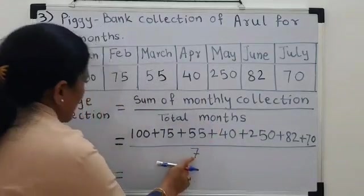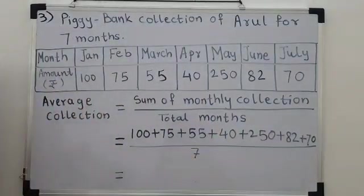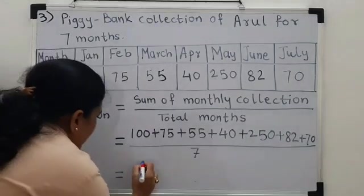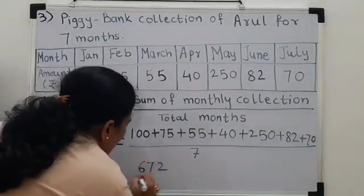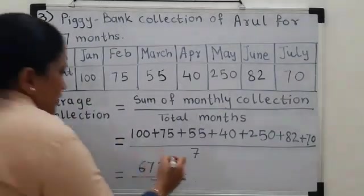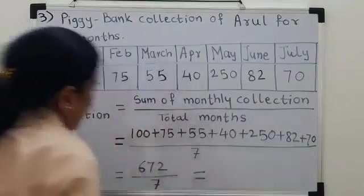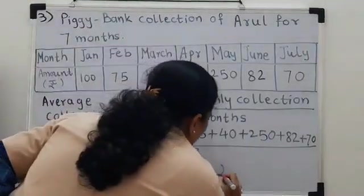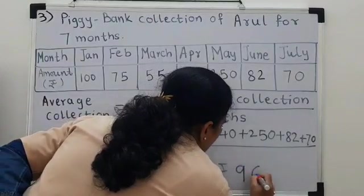So, it is upon 7 here. Now, if I add this series of numbers, I get 672. And this upon 7 is carried as it is. If I find out the division, I get 96 as the average.